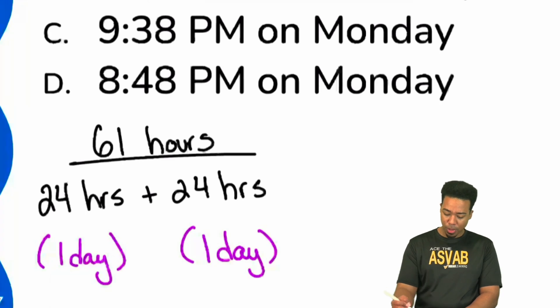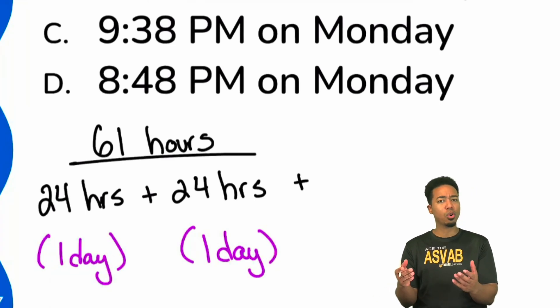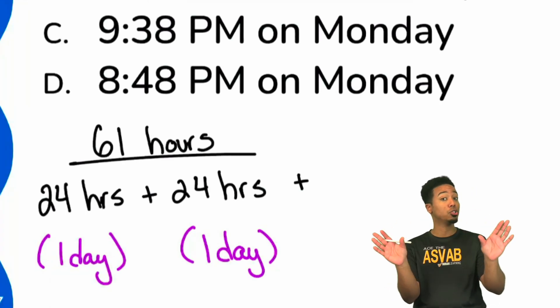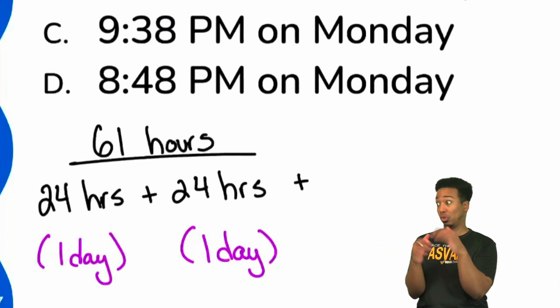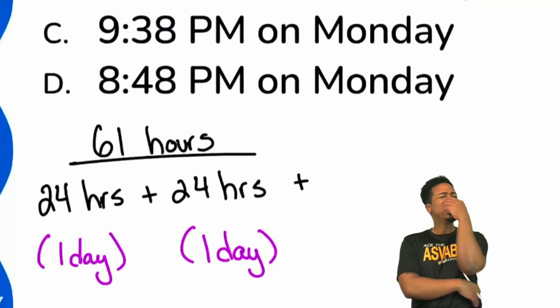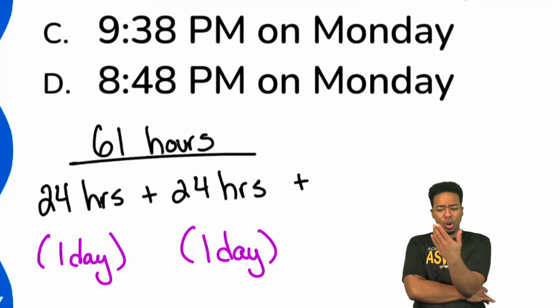If we were to add another 24 now, we would go over. That's too much because 48 plus 20 is 68. How many hours are left over? Leon gets it - how many hours are left from 48 to 61?